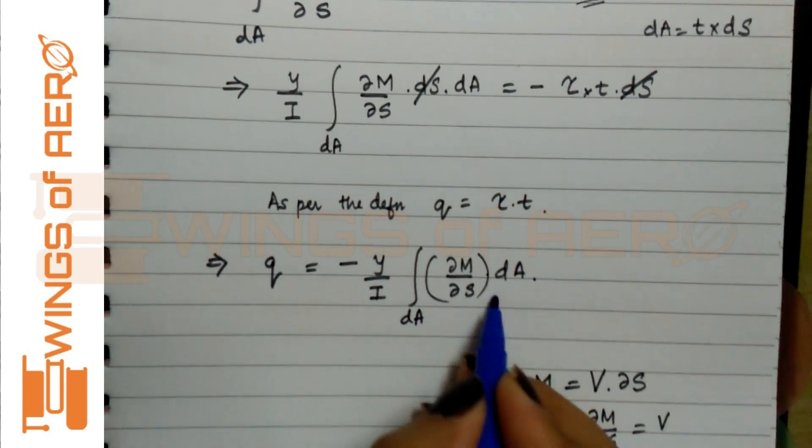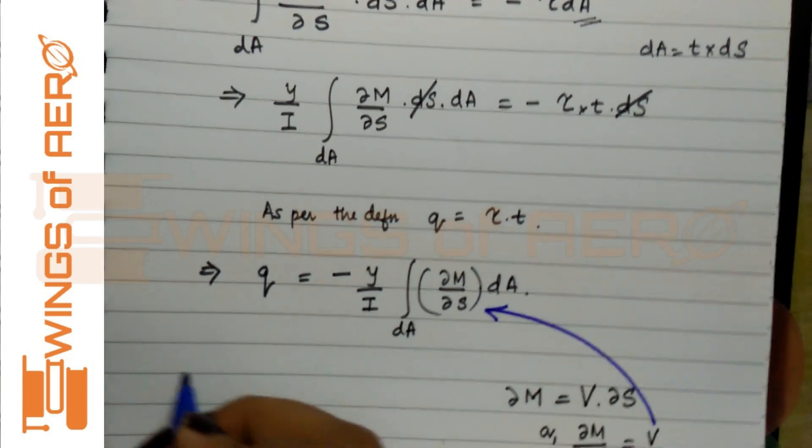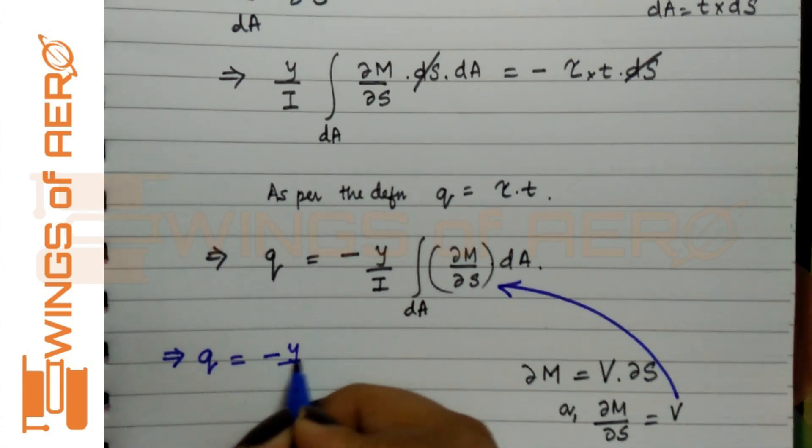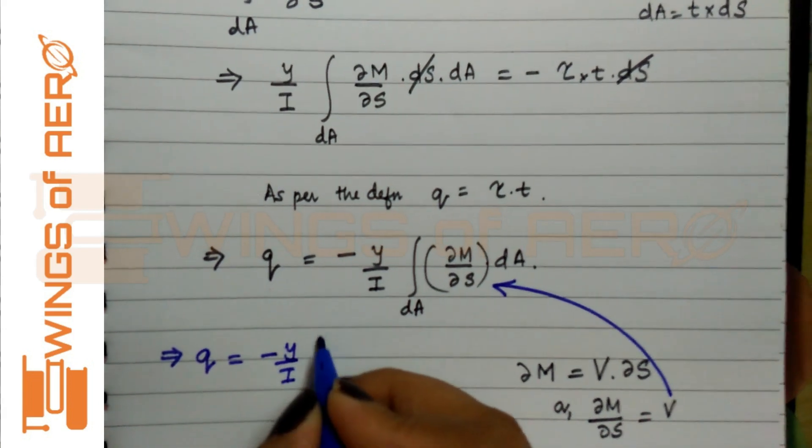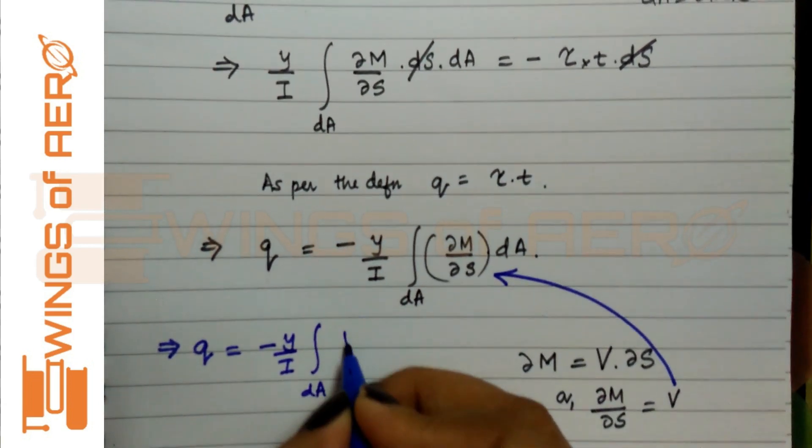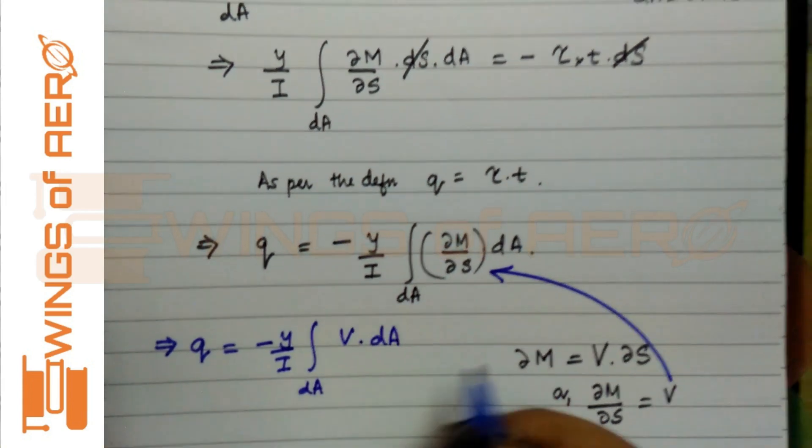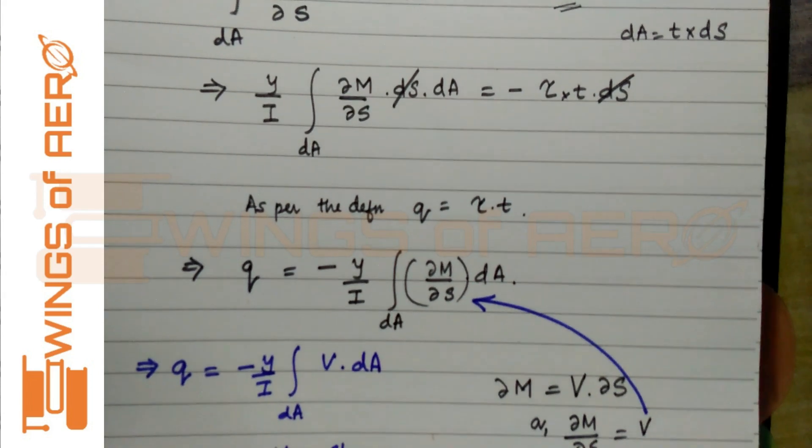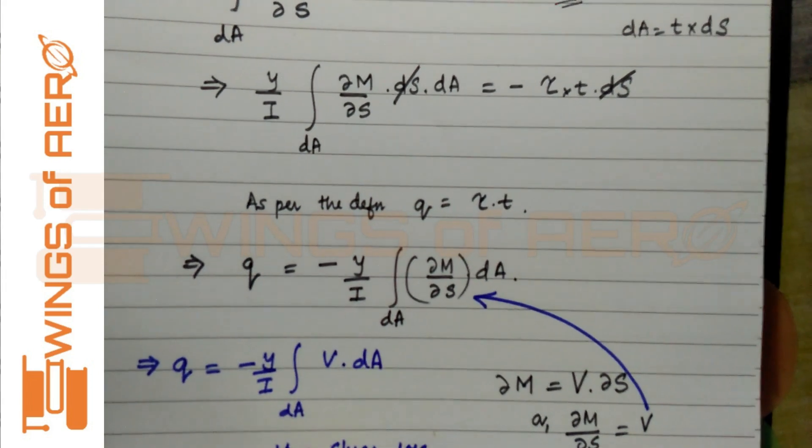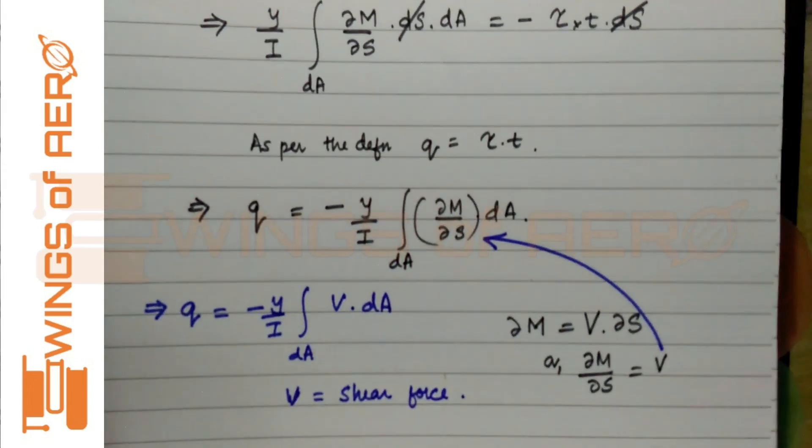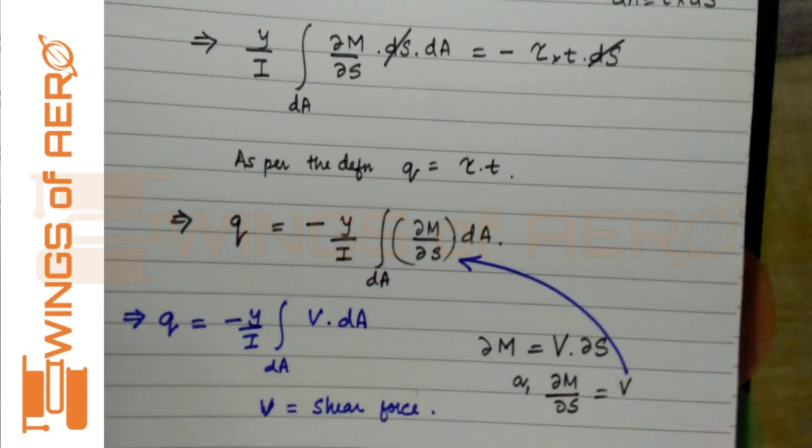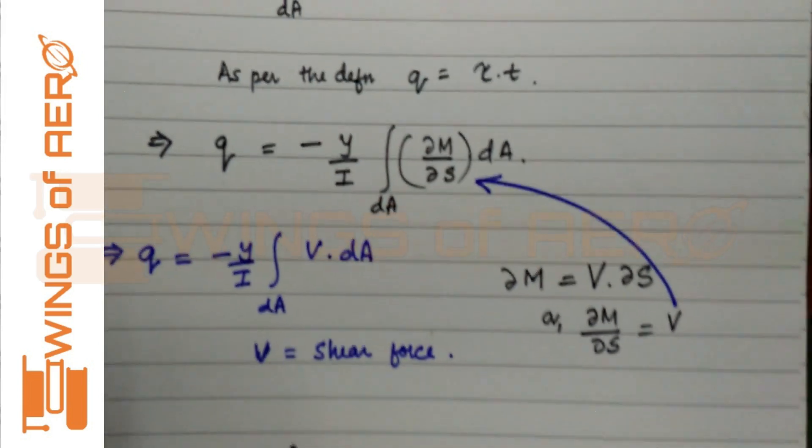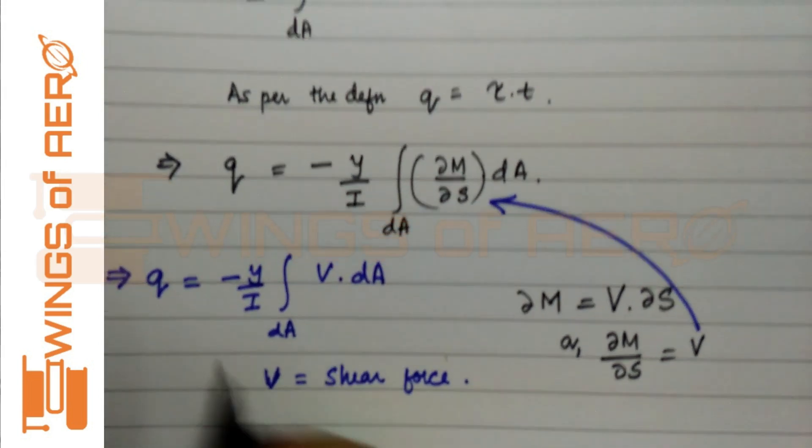We are going to substitute this value over here. So we get q equals minus Y by I integral V into dA. What is V? V means shear force. Now, shear force of a given system or problem will be constant, so we can take V outside.